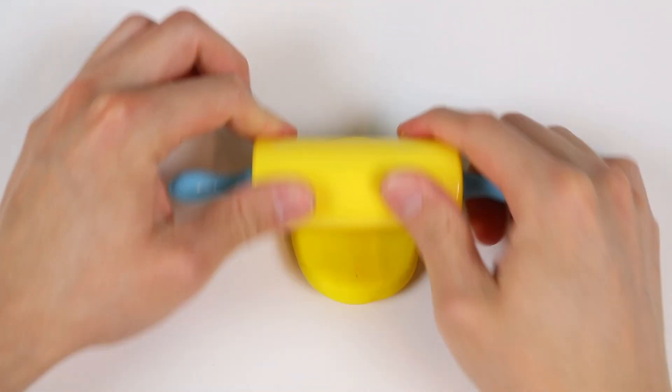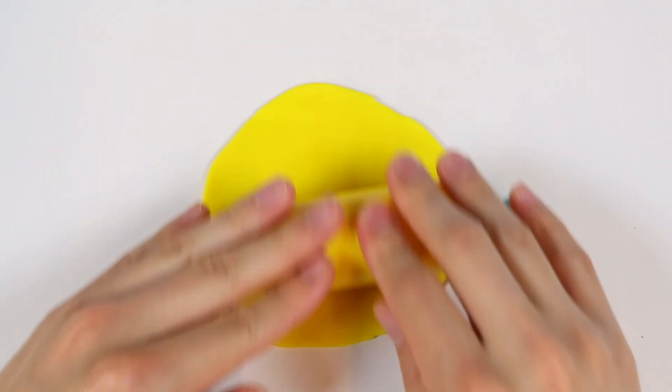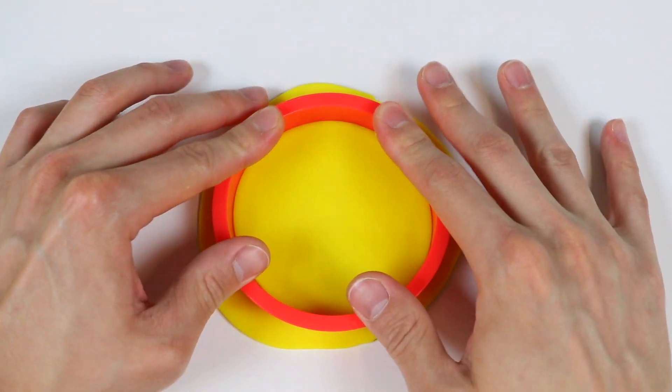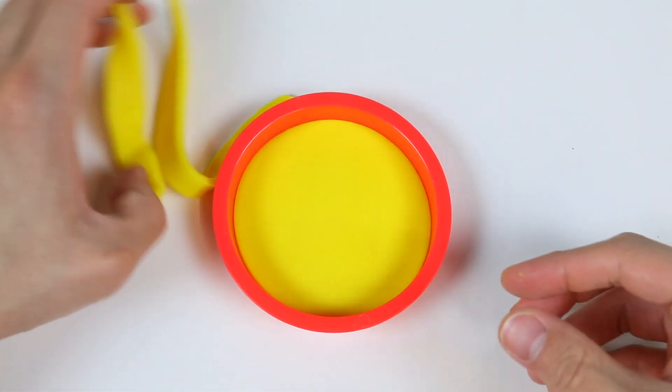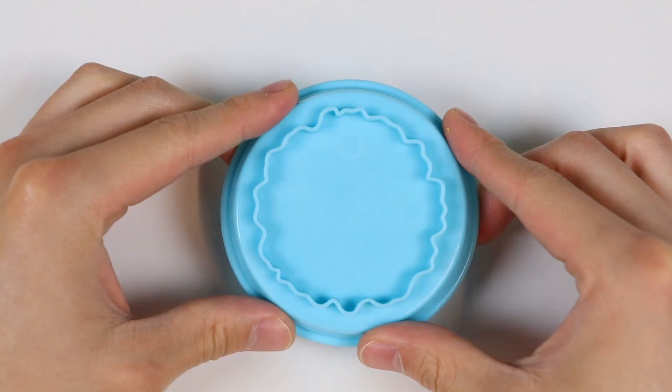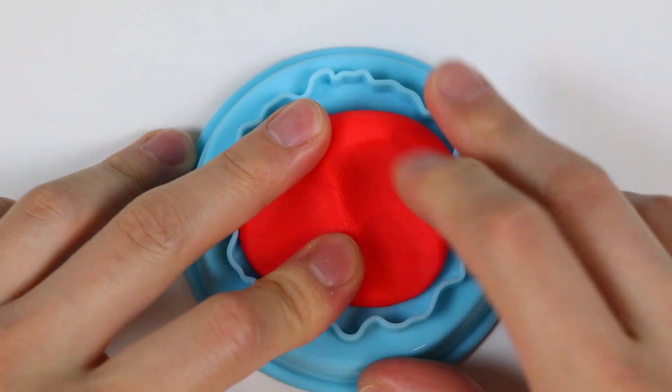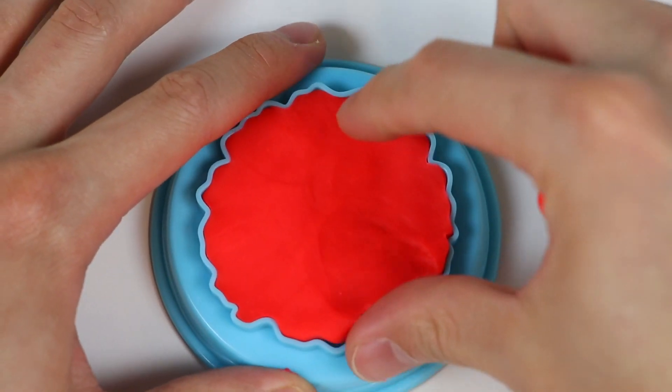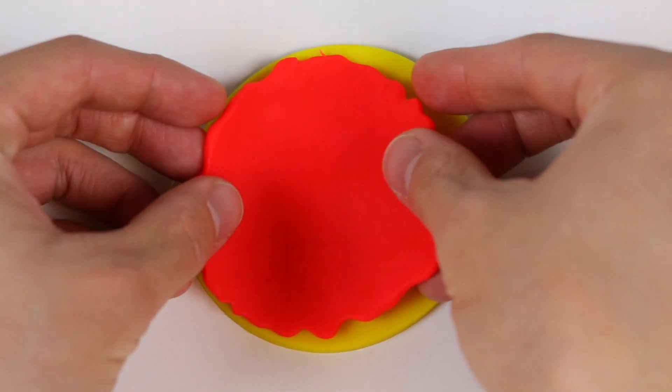Now let's make dinner. Start by rolling out this yellow play-doh. We're going to make a pizza. This will be the crust. And now let's use the bottom of this pizza dish to make the pizza sauce. Our pizza sauce is ready. Put it on the crust.